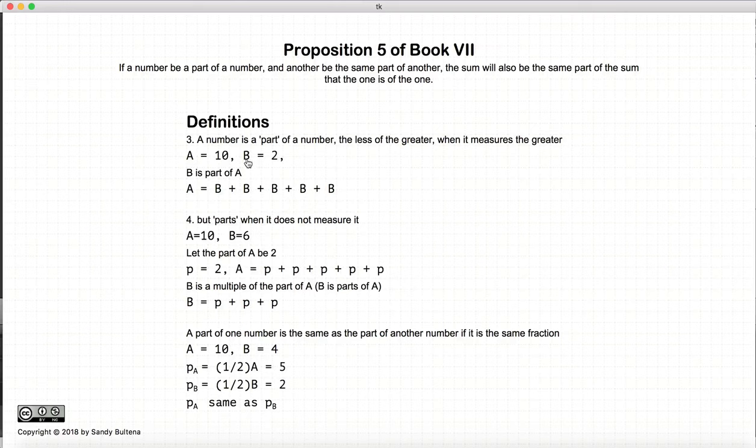Basically, it means that if b is 1 fifth of 10, so it is a part or fraction. It's not a bad idea to substitute the word fraction here, wherever you see the word part. So, b is a fraction of 10 and it's equal to 2. And b measures 10 because it's b plus b plus b plus b plus b is equal to a.